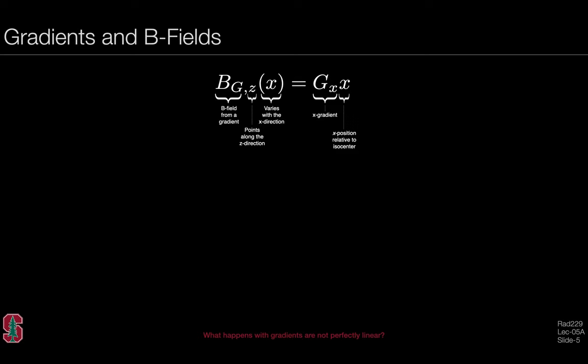This is the mathematical description we provided for gradient fields previously. In MR, we generally work with the terms on the right-hand side. We apply a specific amplitude for a gradient field in a particular direction, the x, y, or z gradient, and the magnetic field generated depends on position relative to isocenter. The linearity is seen in this term here, where the gradient amplitude linearly multiplies onto spatial position.